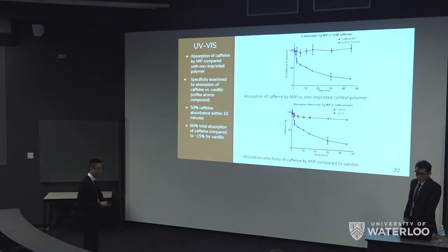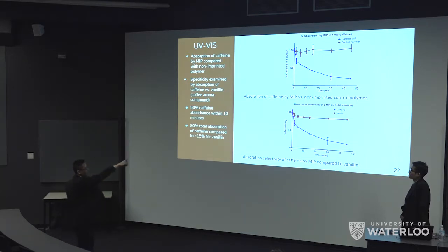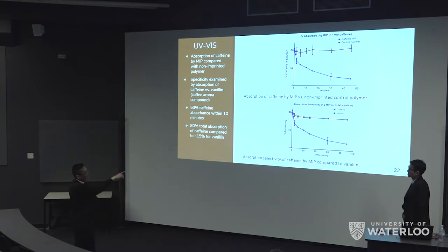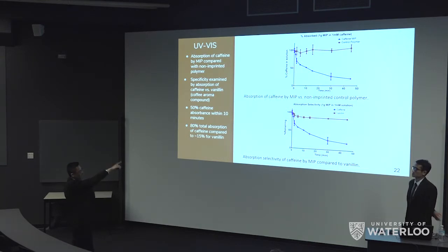Now we want to test the pocket specificity. To do this, we have polymer solution, add in caffeine at a known concentration, let it stir for a set amount of time, take out aliquots at certain time points, and measure caffeine concentration. We find that after 10 minutes, our polymer absorbs 50% of the caffeine, which is pretty good. We also have two controls: a control polymer without binding pockets, which shows no binding as expected; and a test with vanillin, which shows only a tiny bit of binding due to non-specificity of the polymer.